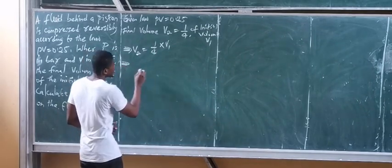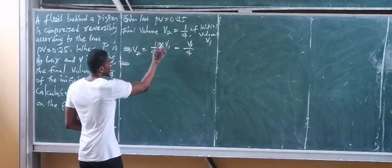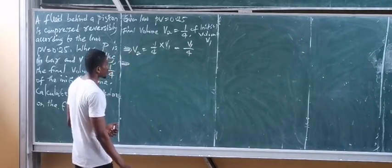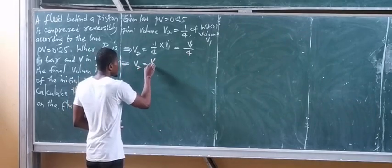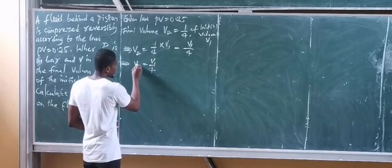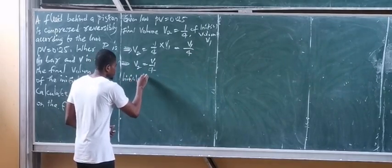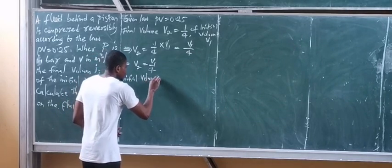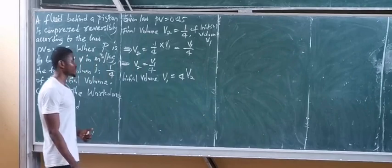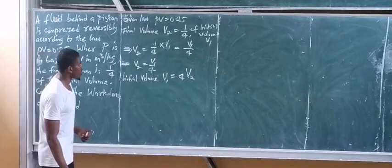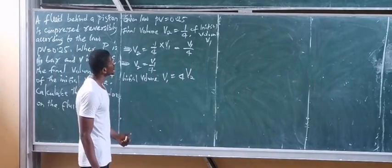We can say that V2 equals V1 over 4. If you cross multiply, V2 multiplied by 4 equals V1. So the initial volume V1 is now equal to 4 times V2. This is the first thing we establish: V1 equals 4V2.